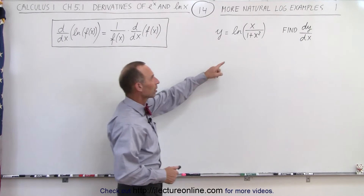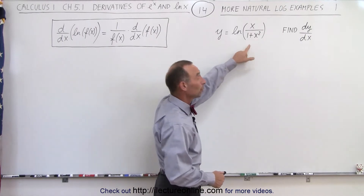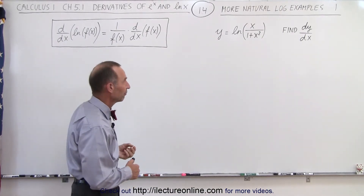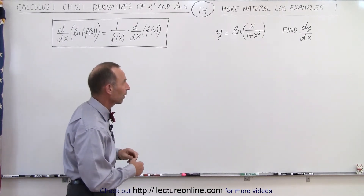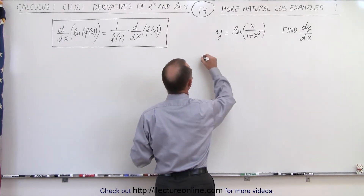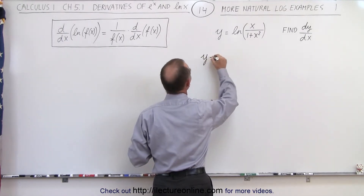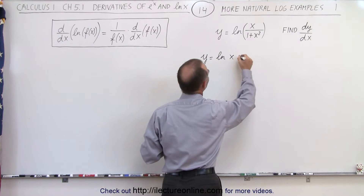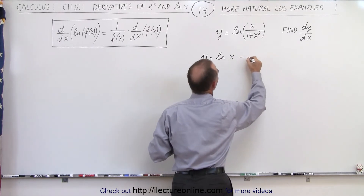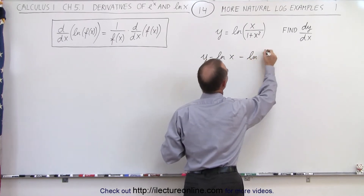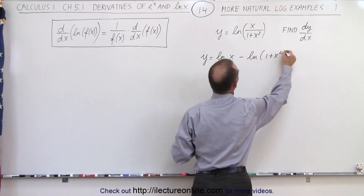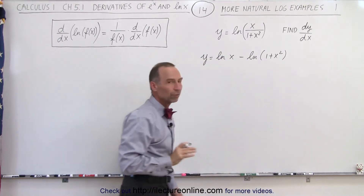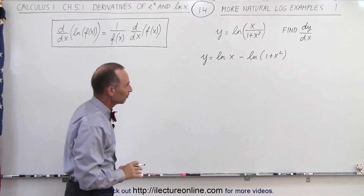Since we have the natural log of a quotient, we can write that as the difference of two natural log functions. So we can say that y can now be written as the natural log of x minus the natural log of 1 plus x squared, and it's easier to take the derivative of each one of those separately.